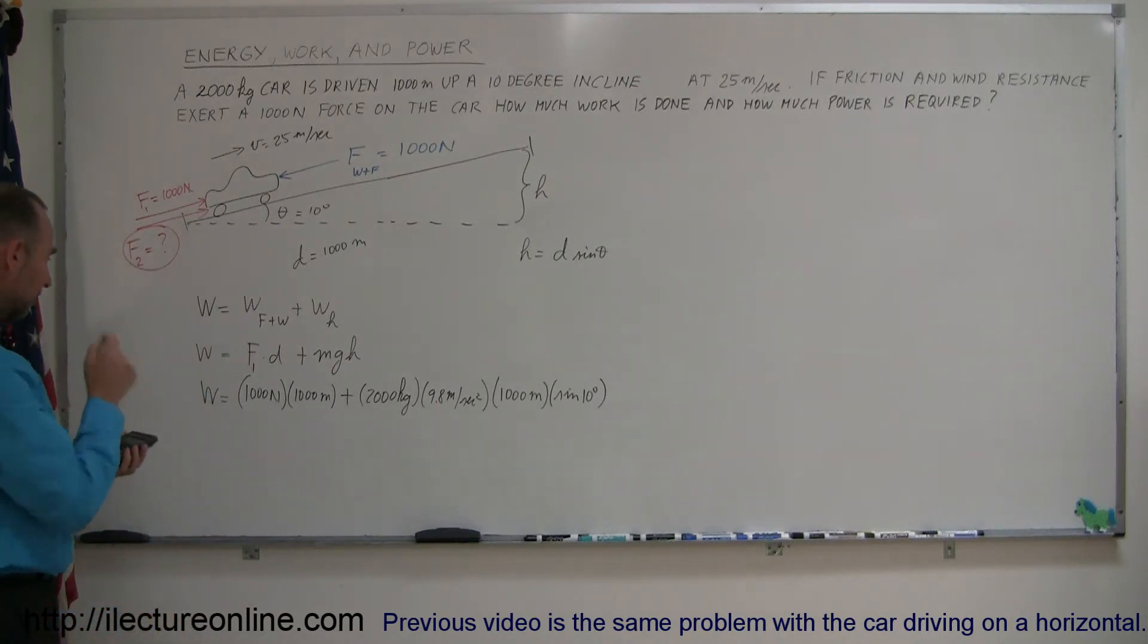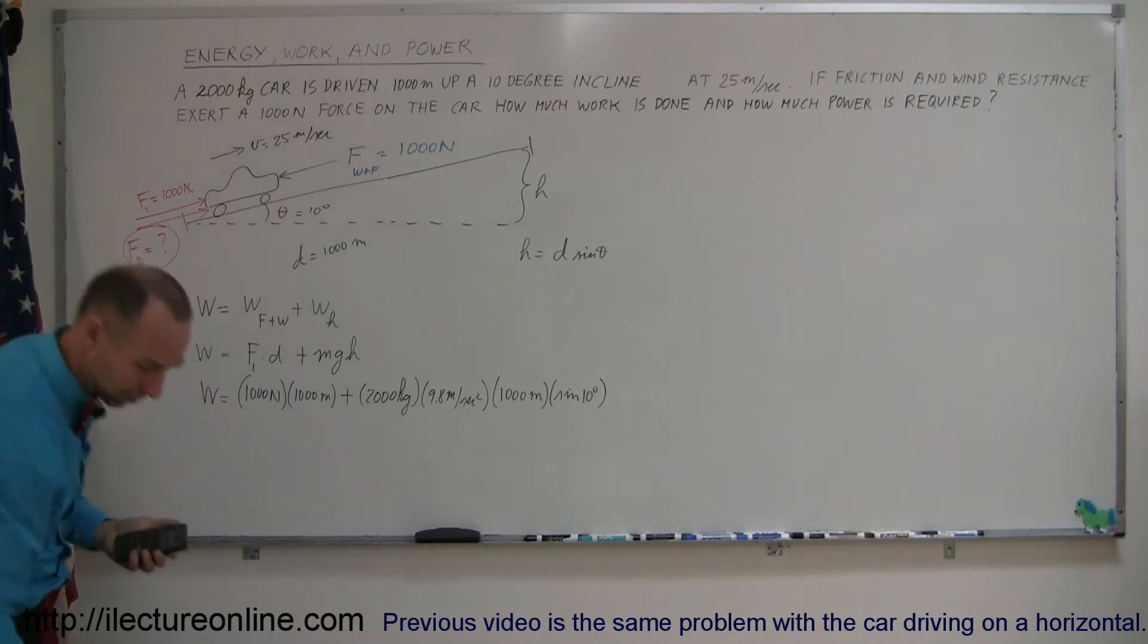So, we have 1,000 times 1,000 is 1 million, and then we have 2,000 times 9.8 times 1,000 times the sine of 10 degrees. That's about right. That's 2 million. Yes, that looks about right.